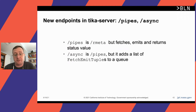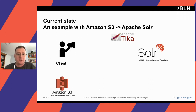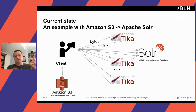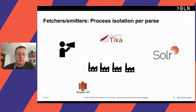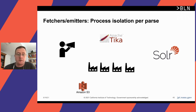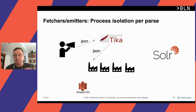All of this works with Tika server with pipes and async. Pipes means you send something and get a response back; async means you send a bunch of requests and the processing happens independently. Currently, a client goes to S3, grabs bytes, sends them to Tika, and then sends text to Solr — which is horrible for scaling because the client is sloshing all these bytes everywhere. With fetchers and emitters, the client sends a JSON fetch-emit tuple to Tika, which passes it to a separate JVM that pulls bytes from S3, does the parsing, and sends output to Solr. When bad things happen, it restarts that JVM.